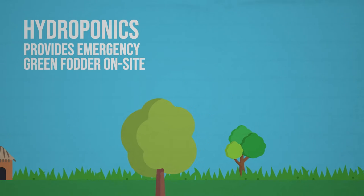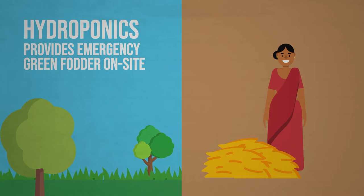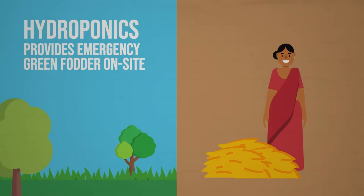Hydroponics reduces the need to access emergency fodder from far-off commons and cultivable fallows, greatly saving time and effort of women in particular.